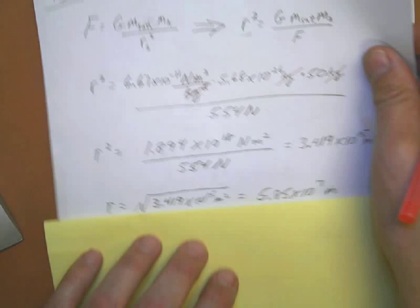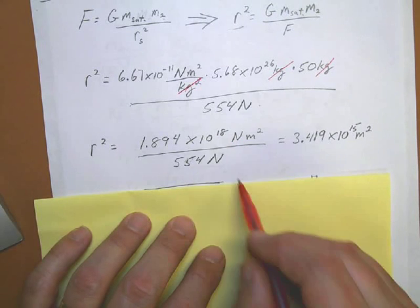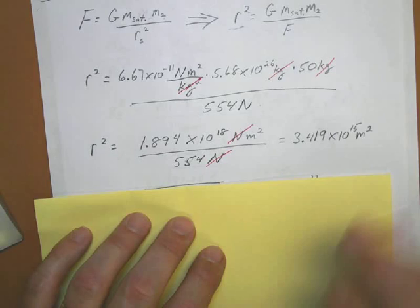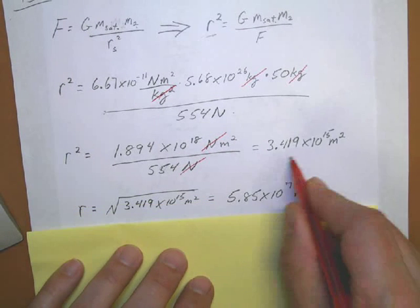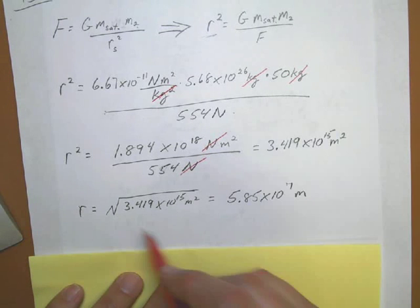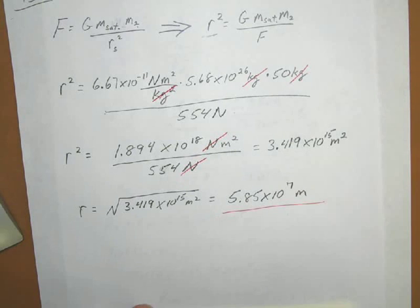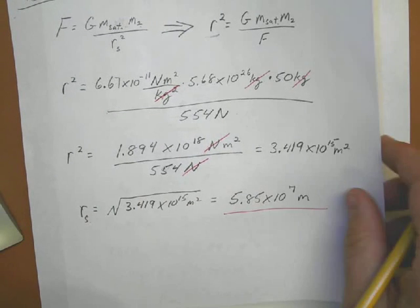And, doing the next step, those numbers come out to this number, newtons meters squared, divided by this many newtons, so our newtons would cancel out. And, you get that the r squared is equal to this many meters squared, so taking the square root of that, you get 5.85 times 10 to the 7th meters, as the radius of Saturn. I probably should have put radius of Saturn in here, S. Voila!